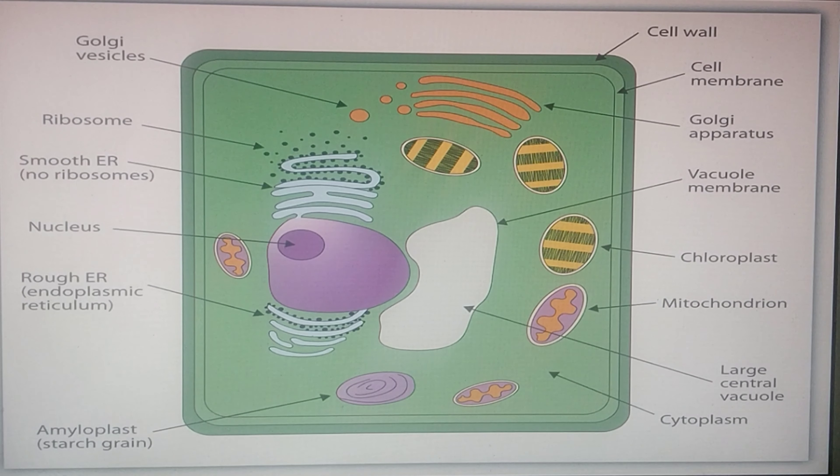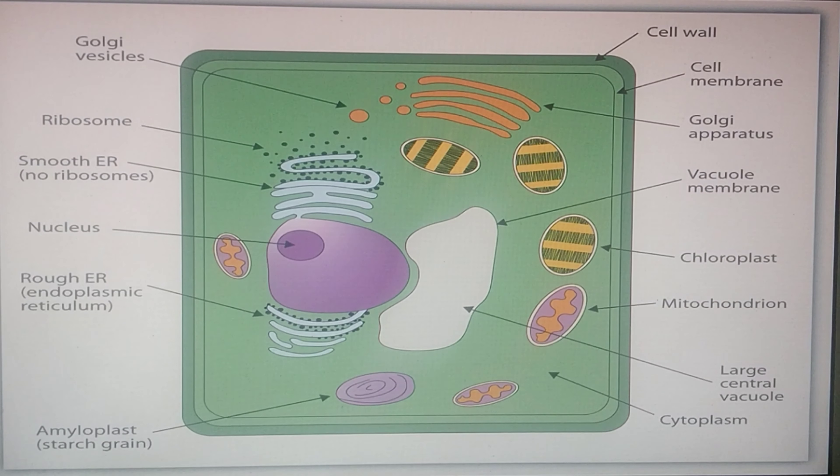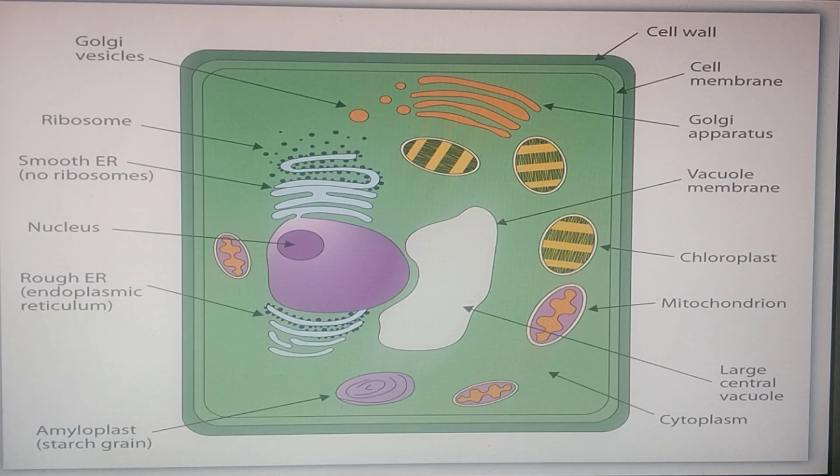Okay, now we saw what is a plant cell, what are the parts of a plant cell and what are the characteristics of all the plant cells. Okay, now let us see the animal cell.